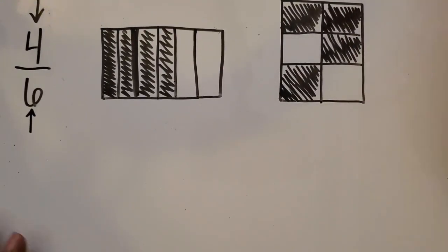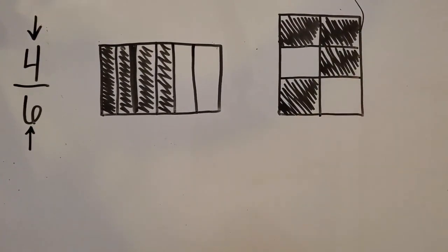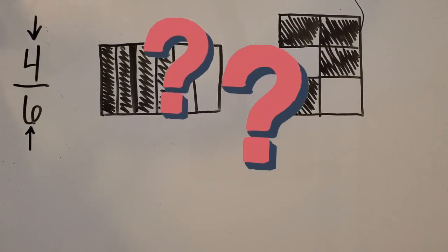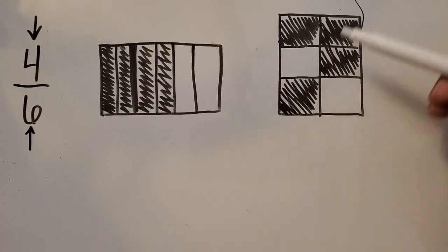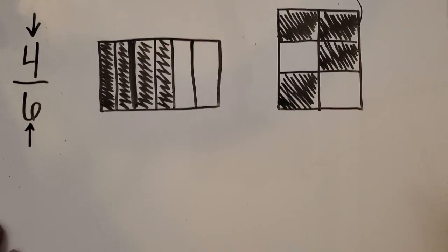So the question here is, does this model still represent 4/6? Yes, because out of 6 equal parts, 4 are shaded in, even if all 4 are not right next to each other. Let's look at another example.